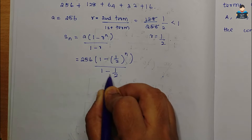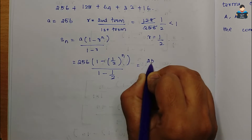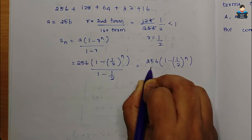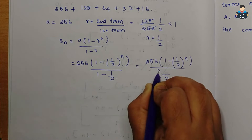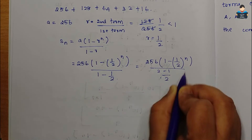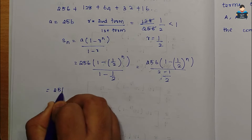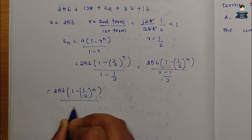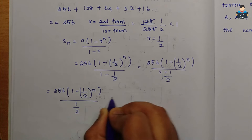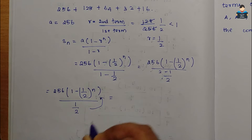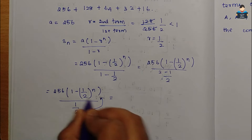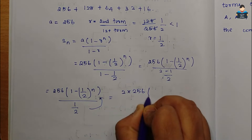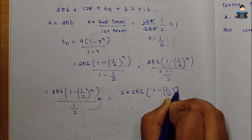Substituting a = 256 and r = 1/2 into the formula: Sn = 256 × (1 - (1/2)ⁿ) / (1 - 1/2). The denominator becomes (2-1)/2 = 1/2, so Sn = 256 × (1 - (1/2)ⁿ) ÷ (1/2), which equals 2 × 256 × (1 - (1/2)ⁿ).